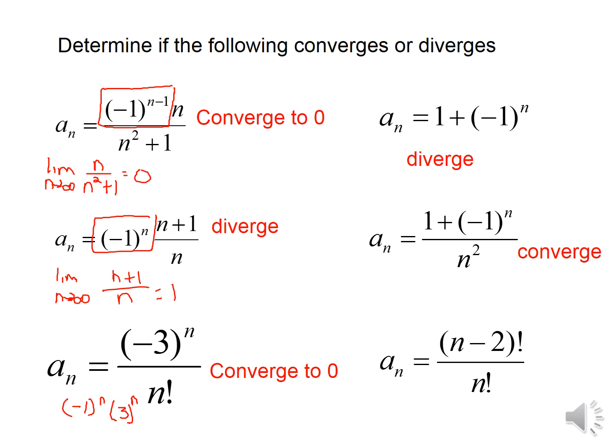This next one diverges because it is actually not an alternating series. If we substitute n=0 we get 1+1=2, and if we substitute n=1 we get 1+(−1)=0, so the sequence bounces back and forth between 2 and 0 — it doesn't go to one value, so it diverges. However, the following example converges: the numerator still bounces between 2 and 0, but the denominator is increasing at such a rate that whether the top is 2 or 0, dividing by a very large number like 20,000 sends it to zero, so it converges.